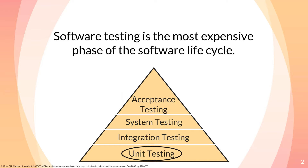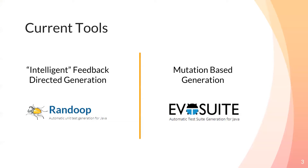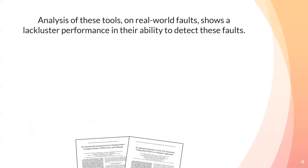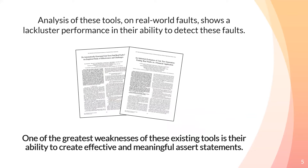Currently, there are two primary tools used to address the generation of test methods and their associated assert statements. The first is Randoop, which generates unit test cases using feedback-directed random test generation. This tool intelligently generates sequences of method implications for a class under test, then executes the sequences and uses the results to create assertions that capture the behavior of the program. The second tool, EvoSuite, uses a mutation-based approach, mutating the focal method of interest so that the assert statement generated accurately captures the bug introduced by the mutation. These tools have undergone extensive analysis, but research found they demonstrated lackluster performance in detecting real-world faults, primarily due to their inability to create effective and meaningful assert statements.